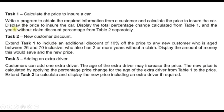As usual for the pre-release material, we have three tasks: Task 1, Task 2, and Task 3. Task 1 has more than 70% of the solution. Task 2 extends Task 1, and Task 3 is a further extension. Task 1 asks us to write a program to obtain the required information from the customer, calculate the price to insure the car, display that price, display the total percentage change calculated from Table 1, and display the years-without-claim discount percentage from Table 2 separately.